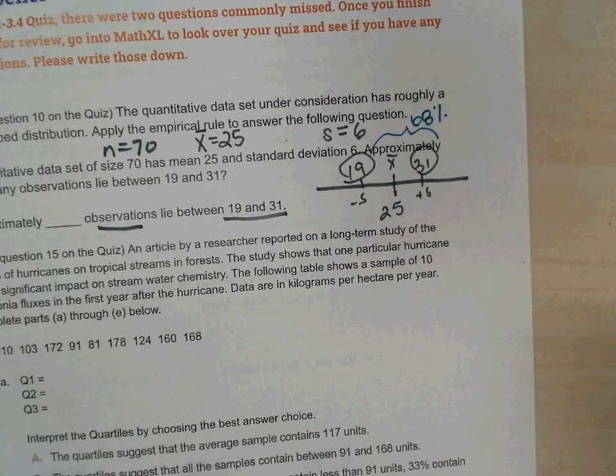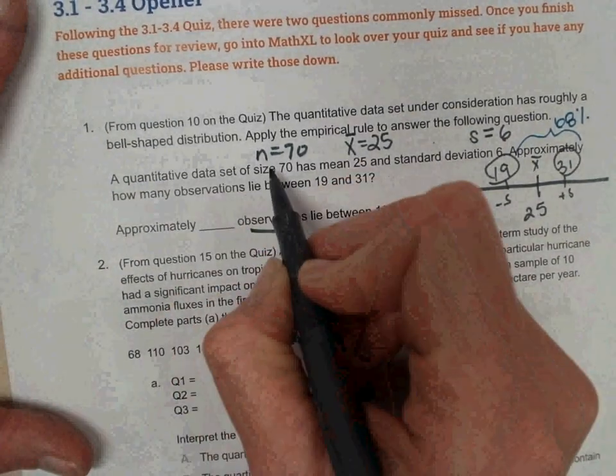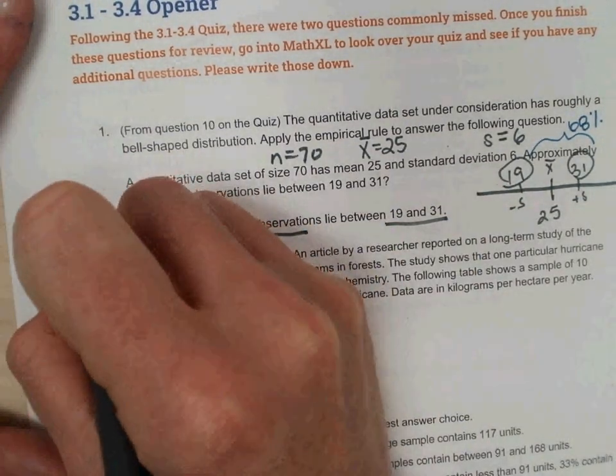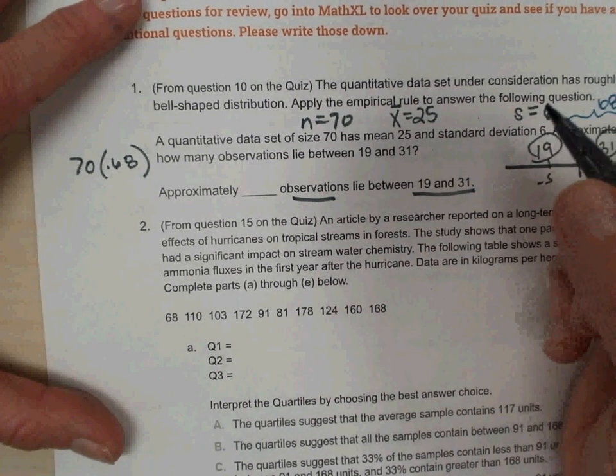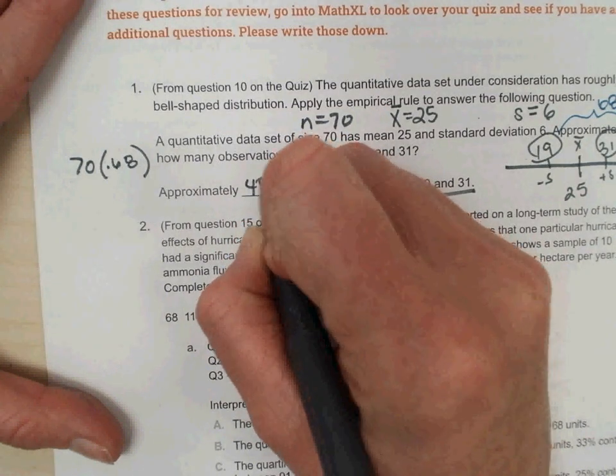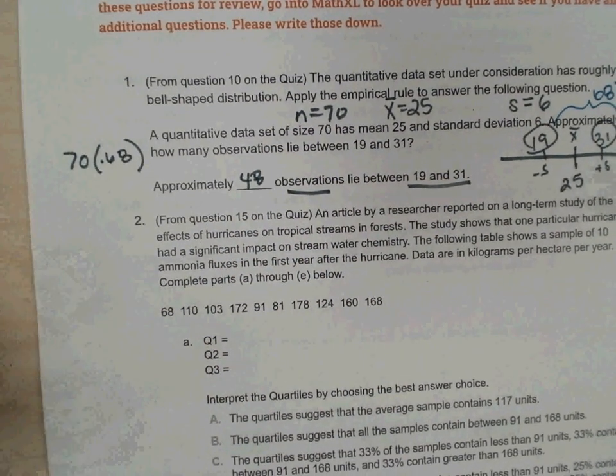Alyssa? I want to do 70 times 0.68. Good. We take the n value, 70, and multiply that by the percent, change it to a decimal, 0.68. And what did you get? I got 47.6, but I wanted to just round it up to 48. Yes. Because it's a number of observations, so we need a whole number. So 48 is the number of observations that lie within that range.